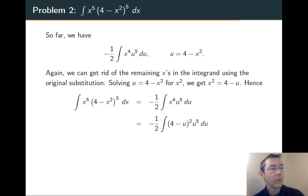So we can integrate this one. In order to do that, we're going to need to foil out the 4 minus u squared, 16 minus 8u plus u squared, and then multiply through the u to the 5th. There's what we get.